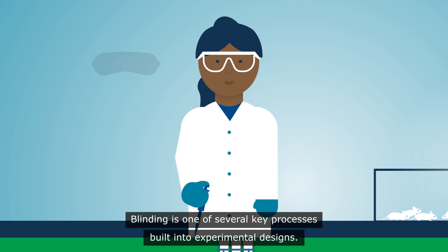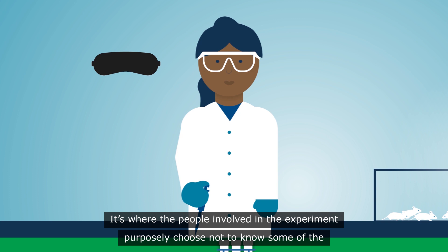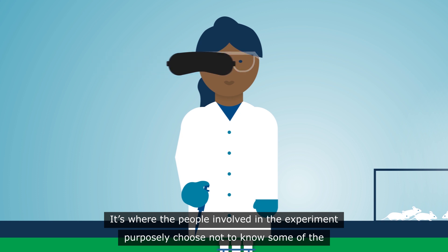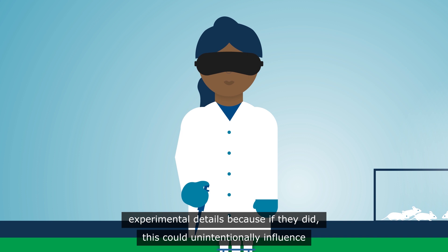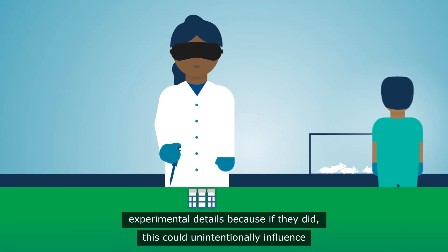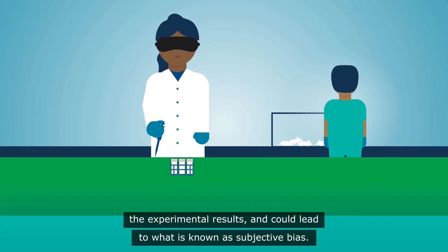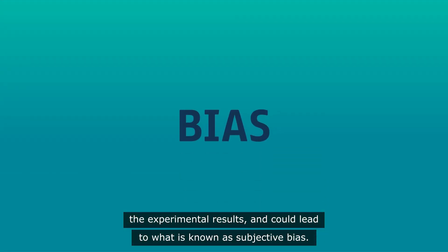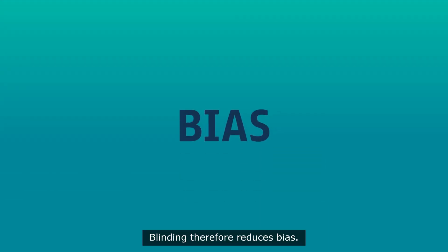Blinding is one of several key processes built into experimental designs. It's where the people involved in the experiment purposely choose not to know some of the experimental details, because if they did, this could unintentionally influence the experimental results and could lead to what is known as subjective bias. Blinding, therefore, reduces bias.